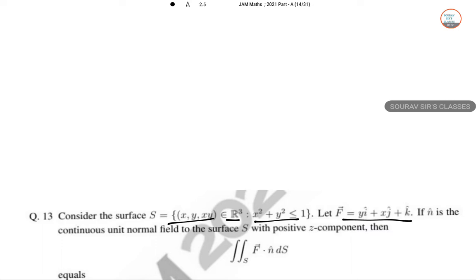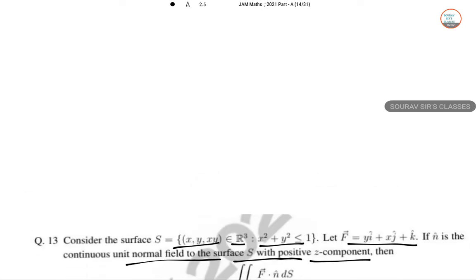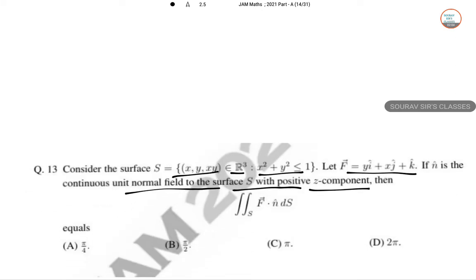N hat is the continuous unit normal field of the surface with positive Z component. Then what will be the value of this integral F. So S is X, Y, X, Y and this. Let me draw the diagram first.